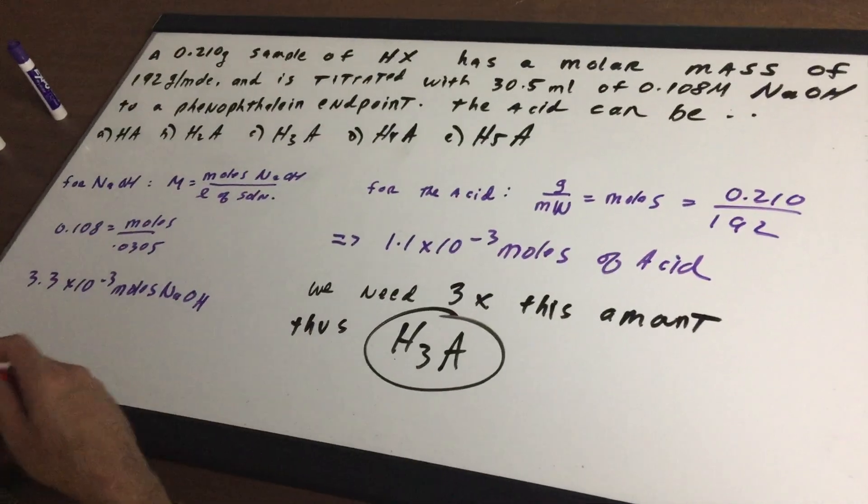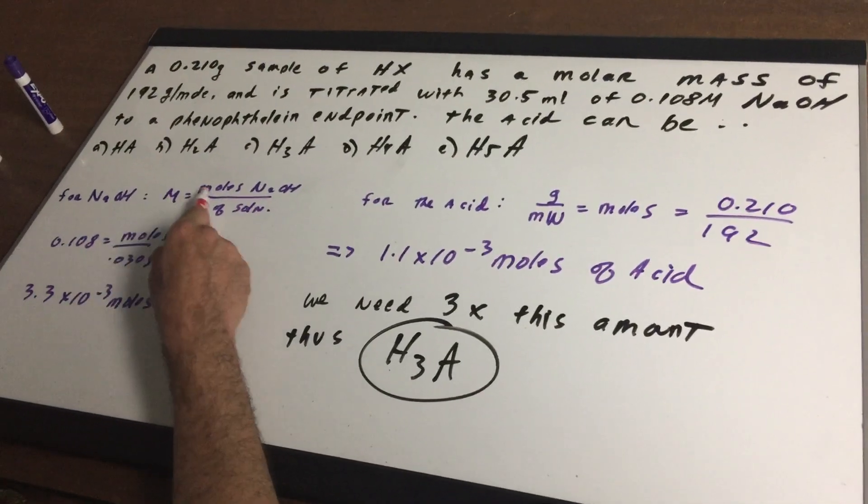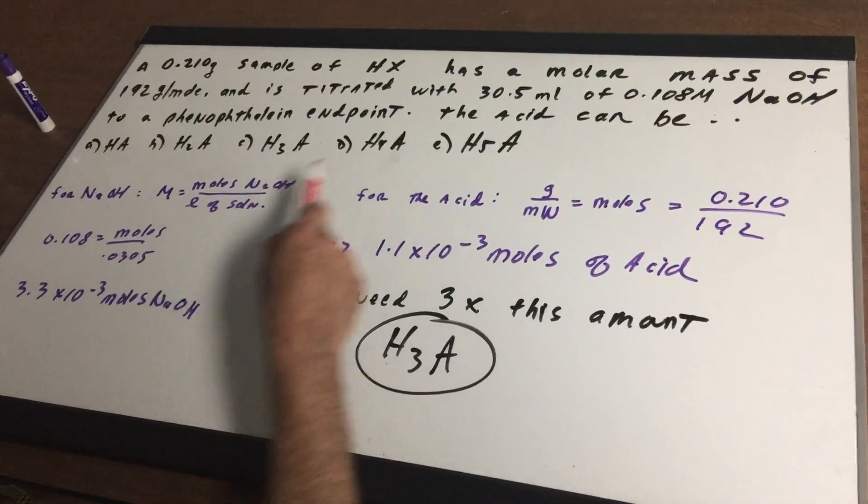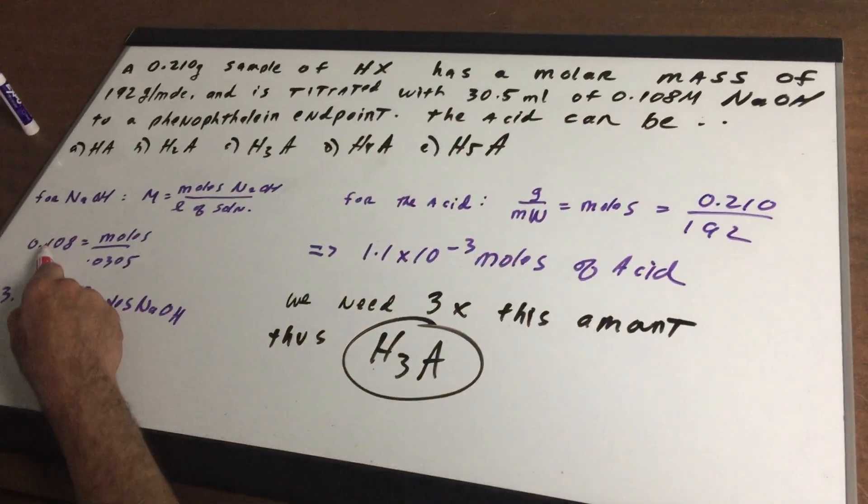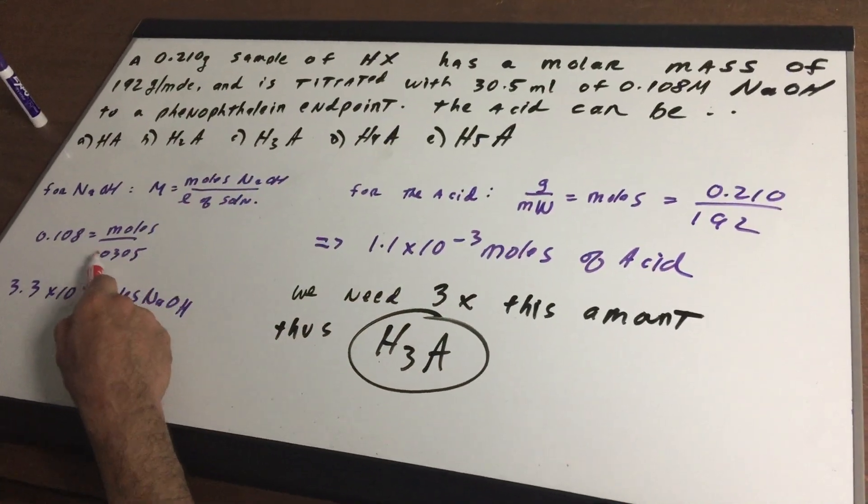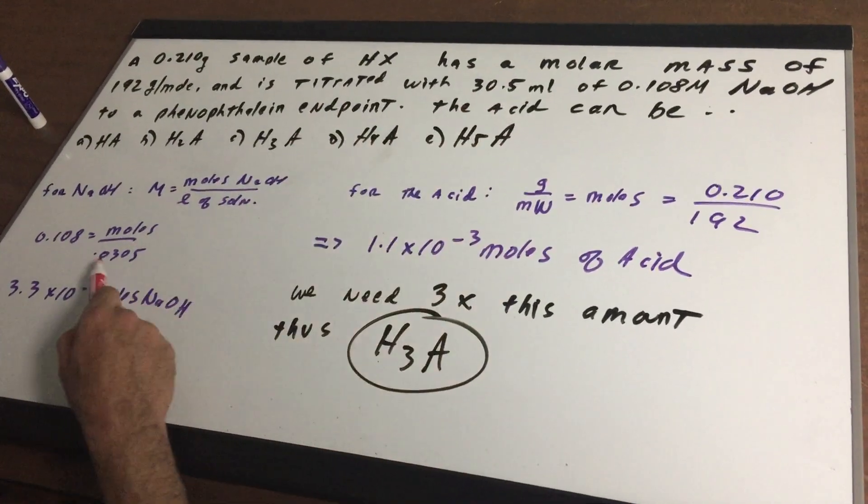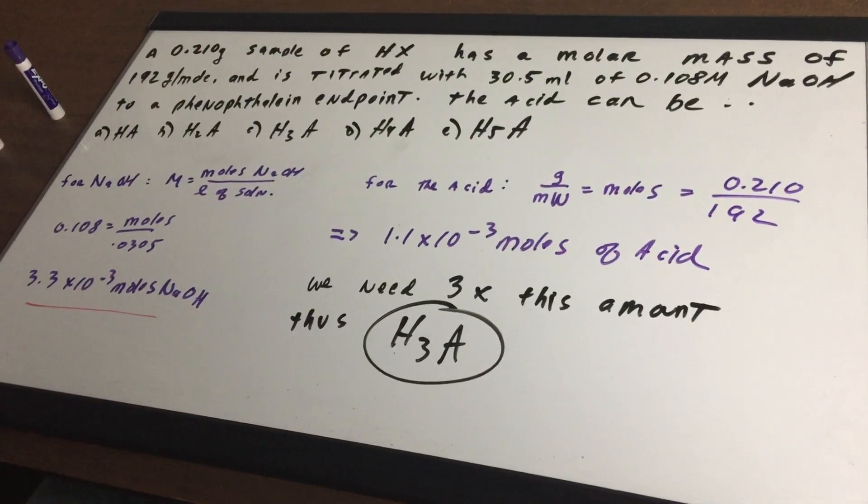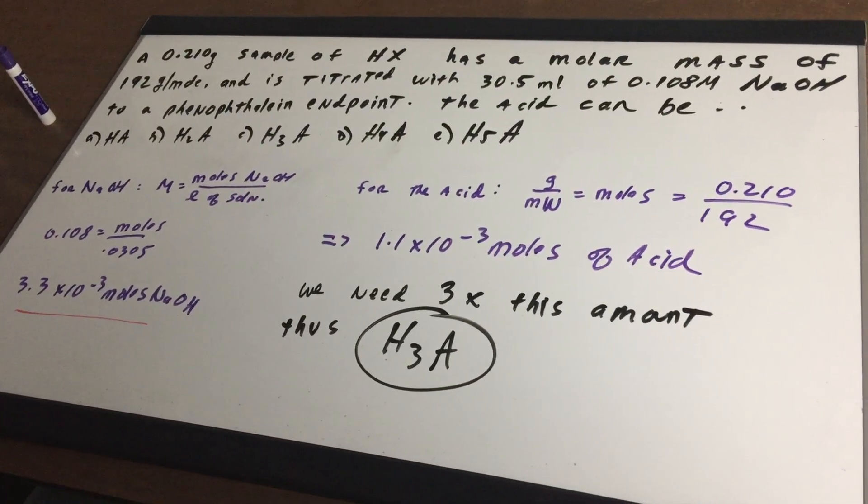Now, how much base do we have? We know that molarity is moles of the solute over the liters of the solution. We know the molarity is 0.108. We know the liters is 0.0305, which is divided by 1,000. And that gives me 3.3 times 10 to the minus 3 moles of base.